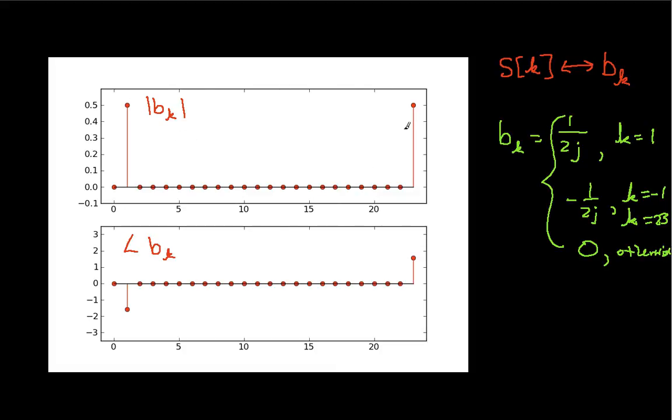And so that's what we have plotted here. The magnitude is 1 half, and the phase angle is basically 1 over j here. That has a phase angle of minus pi over 2. Minus 1 over j has a phase angle of pi over 2. So these are our Fourier series coefficients for the sine wave.